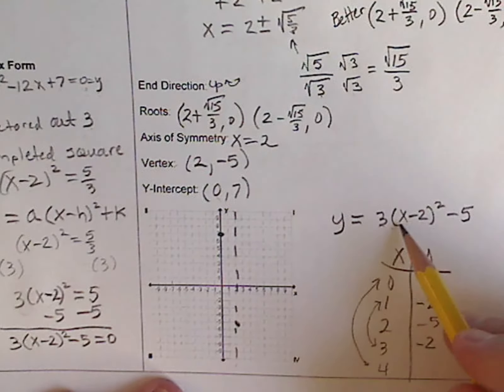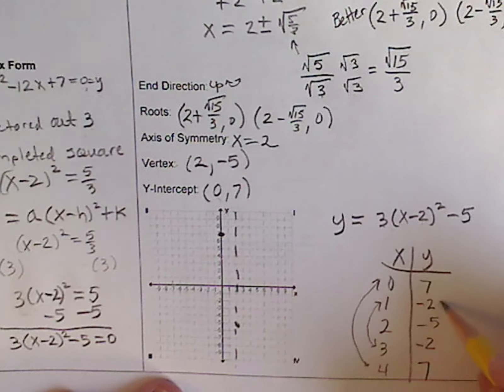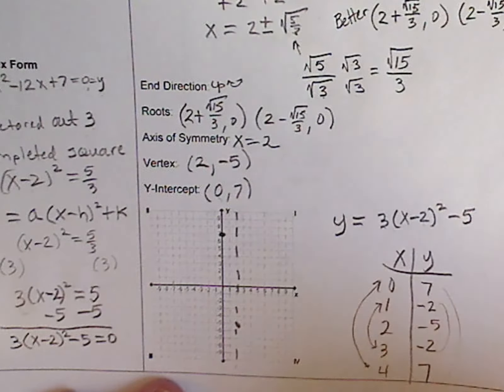Put a 4 in. 4 minus 2 is 2. 2 squared is 4. 4 times 3 is 12. 12 minus 5 is 7. It is symmetrical, as expected.